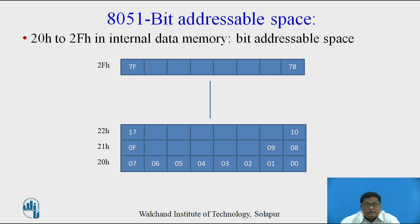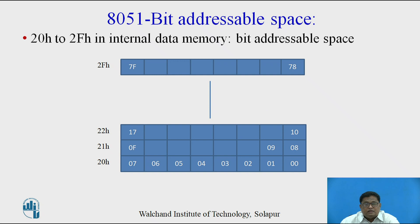128 bits require 7 address bits to address them. That's why bit addresses start from 00 and go to 7Fh. When you are going to use any bit manipulation instruction in 8051, your source must be present in this bit addressable space, and these bits can be accessed with addresses from 00 to 7Fh.